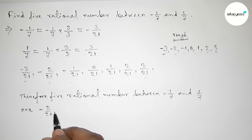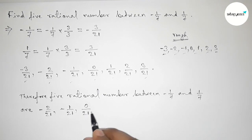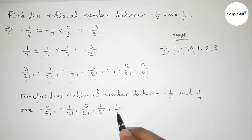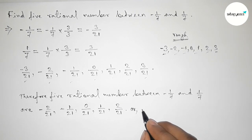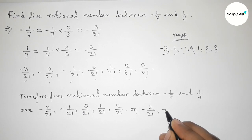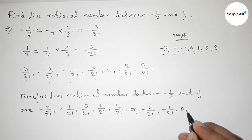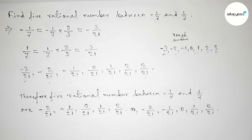Or we can write again: -2/21, then -1/21, then 0/21, then 1/21, then 2/21. That's all.